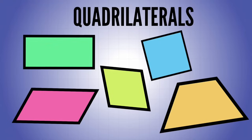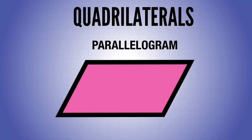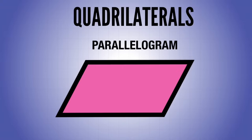There are some very special quadrilaterals we're going to talk about. First up is a parallelogram. A parallelogram means that both pairs of opposite sides are parallel — if extended forever, they would never touch. It also means both pairs of opposite sides are equal, so these two sides are the same length and these two sides are the same length. All the angles inside add up to 360 degrees.